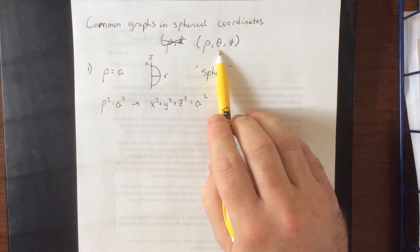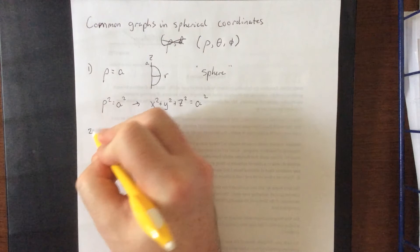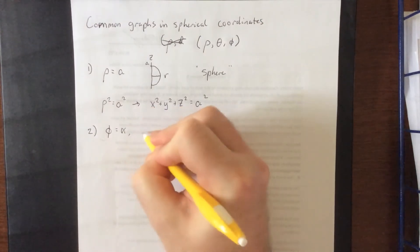In the video on cylindrical coordinates, we talked about what theta equals a constant would be. That would be a half plane. So we'll just go ahead and go straight to phi is equal to a constant.